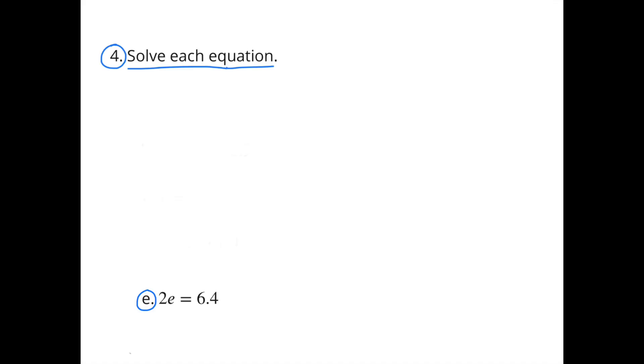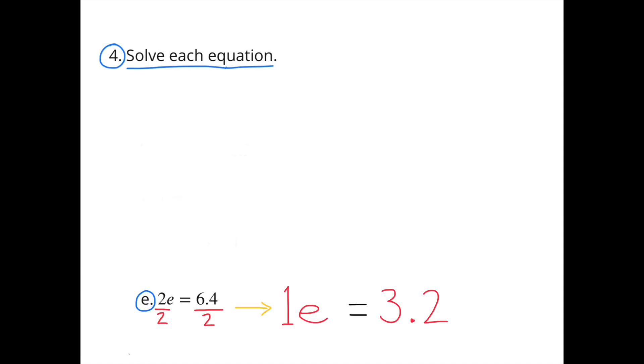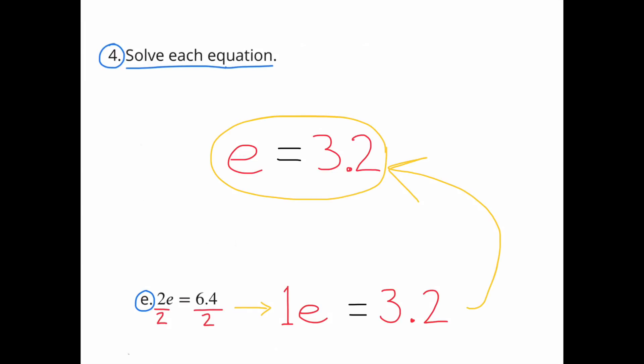E. 2E = 6.4. Since we're solving for E, divide both sides by 2. 2E ÷ 2 = 1E, and 6.4 ÷ 2 = 3.2. So E = 3.2.